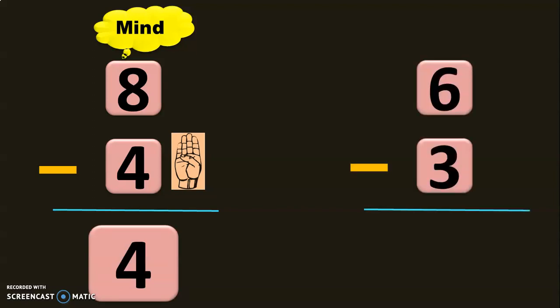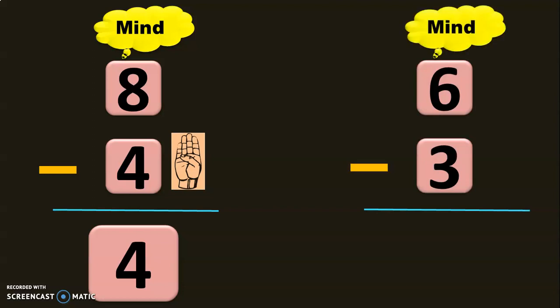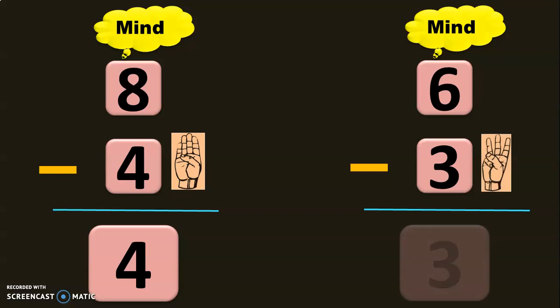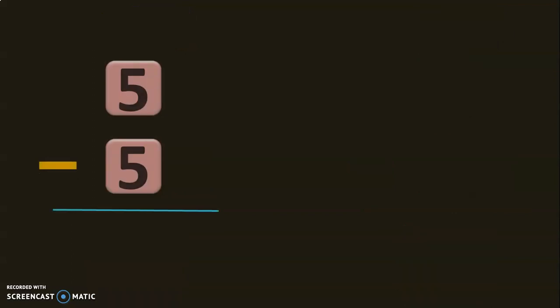6 minus 3: 6 in the mind, 3 in the fingers. Before 6: 5, 4, 3. The difference is 3.